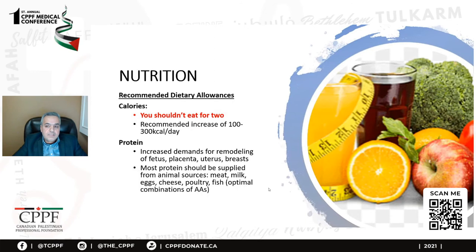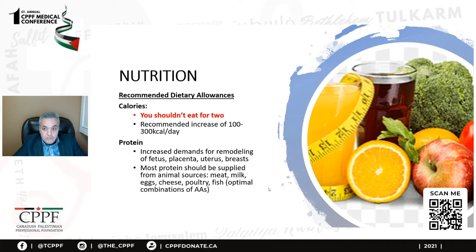Nutrition during pregnancy. Rule number one: you should not eat for two. If you are pregnant, you should eat for yourself — an additional only 100 to 300 kilocalories are needed. Eating for two is a major cause of obesity during pregnancy. Protein is an essential element of nutrition during pregnancy because of the increased demand for the developing placenta, fetus, uterus, and breast. Animal sources are usually a very good source of protein.